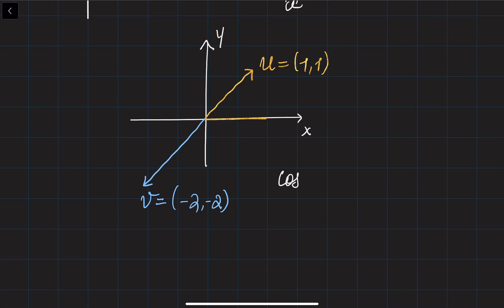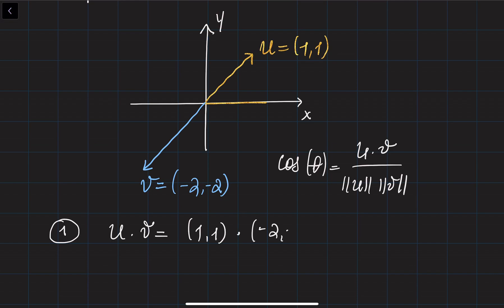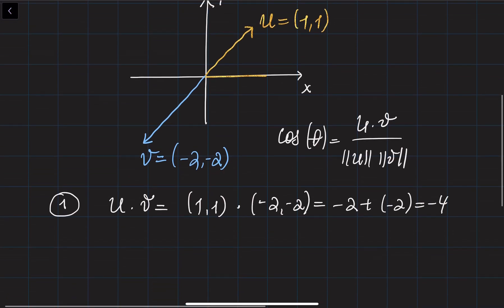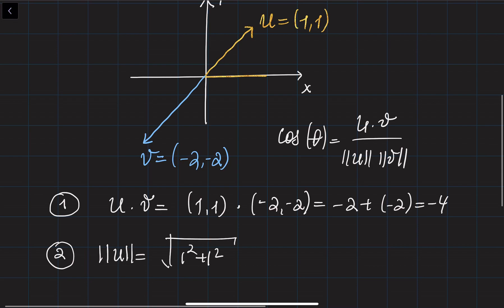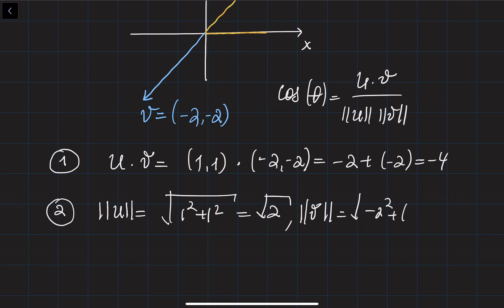I am going to plug them into the formula: cosine of the angle is u·v divided by the norm of u times the norm of v. First, u·v = (1)(−2) + (1)(−2) = −2 + (−2) = −4. The norm of u is the square root of 1² + 1² = √2. The norm of v is √((−2)² + (−2)²) = √8.